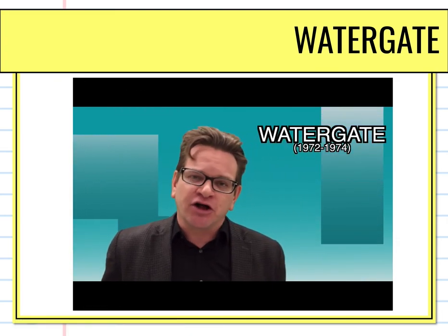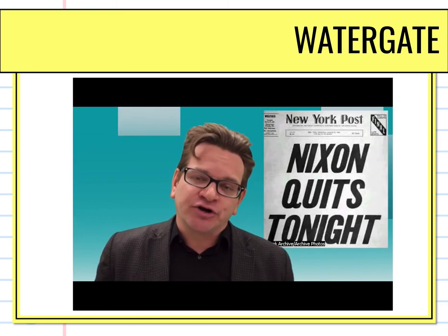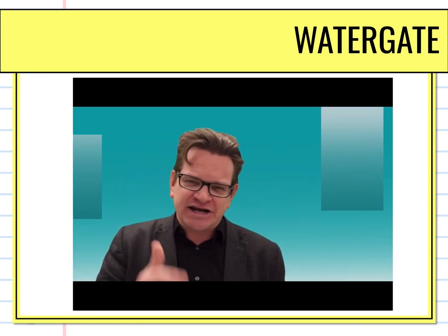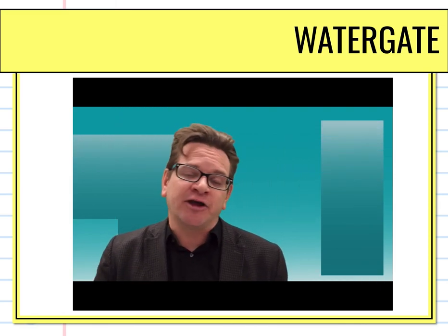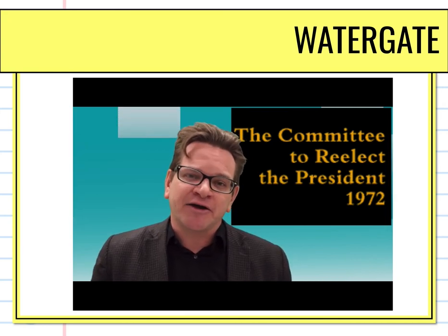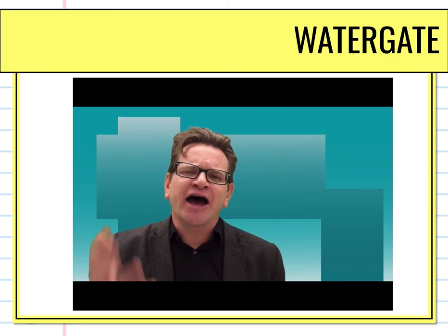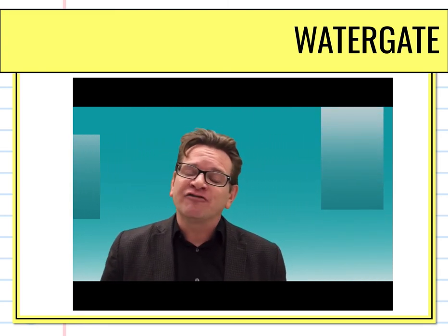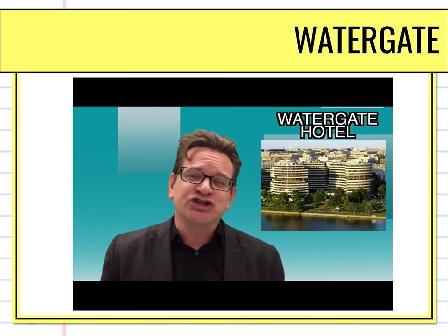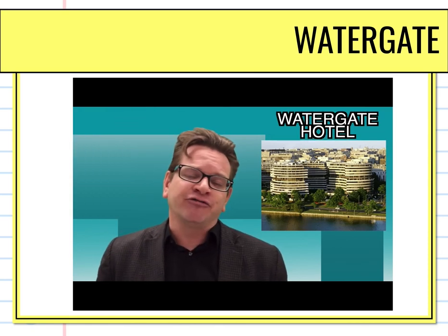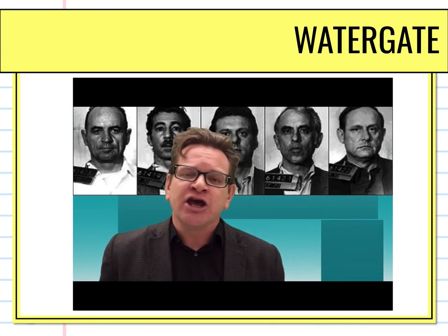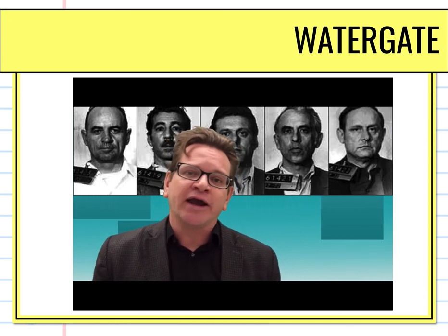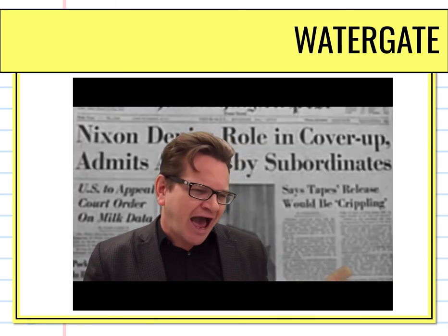Watergate is a scandal in American history that resulted in the downfall and eventual resignation of Richard Milhous Nixon. Nixon ran for his second term in 1972 and did not want to lose — he had lost in 1960 to JFK and won in a squeaker in 1968. He had a group of people working for him nicknamed 'the CREEPs' — the Committee to Reelect the President. They planned to infiltrate the Democratic offices at the Watergate Hotel to steal information and find dirt to win the election. Unfortunately, the burglars were caught. Even though Nixon won the 1972 reelection by a landslide, it was through the trials of these burglars that it became known they were working for the White House.